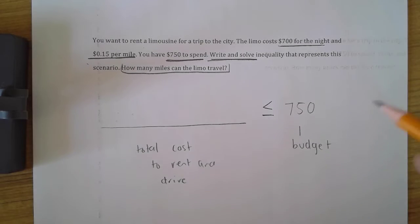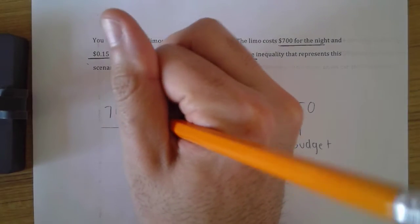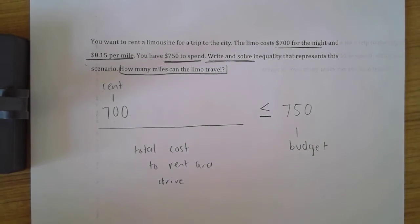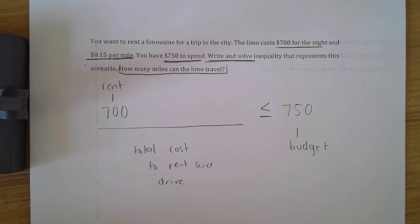How do I find that cost? Well, it costs me $700 to rent for the night. $700. That means that I have about $50 to play around with in terms of mileage.